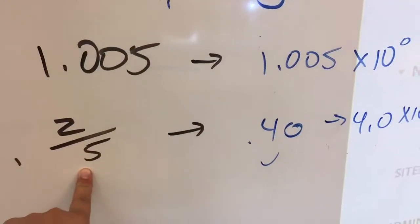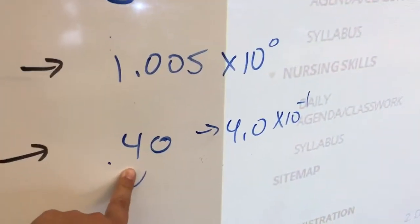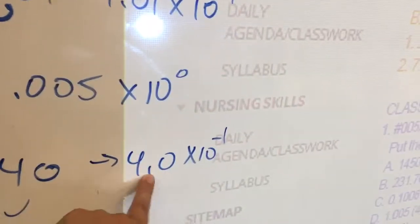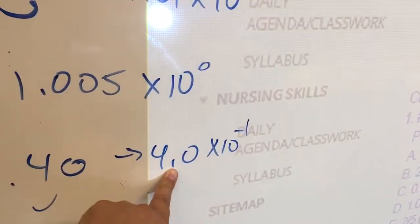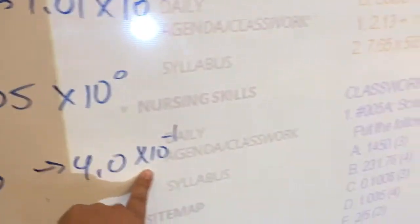And here we have to write this fraction as a decimal with two significant digits, and then to change it from a number that's between one and ten to its original number, we'd actually have to divide by ten.